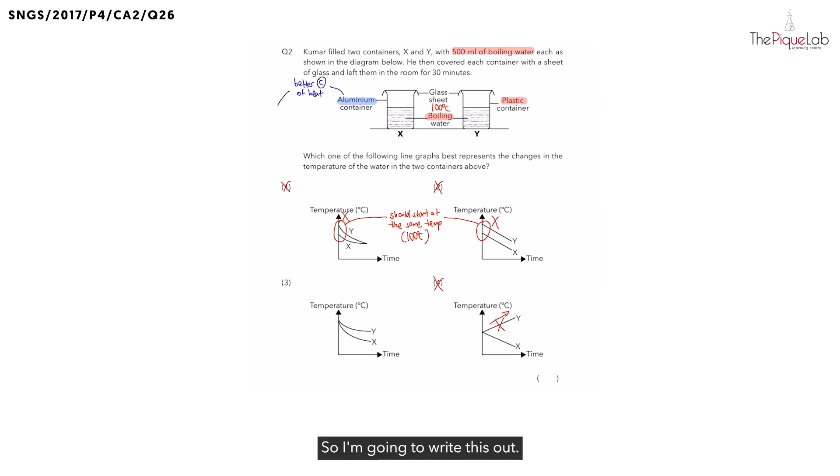So I am going to write this out. The aluminium is able to conduct heat. And the key word here is faster. Faster from where? From the warmer water to the cooler surrounding air.